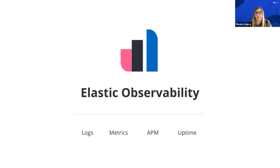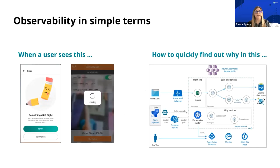Elastic Observability is one of those solutions where we are trying to umbrella some of the uses that people use Elastic for. Say you have an app that millions of users are using every day, and then suddenly one of your systems goes down and your users are seeing something's not right on their screen.